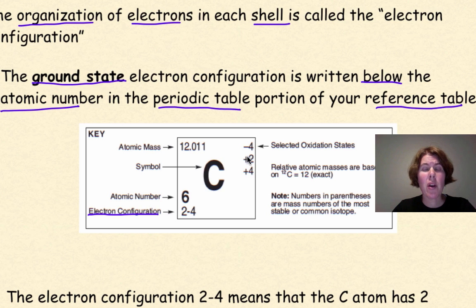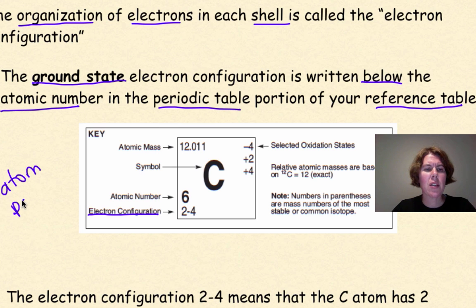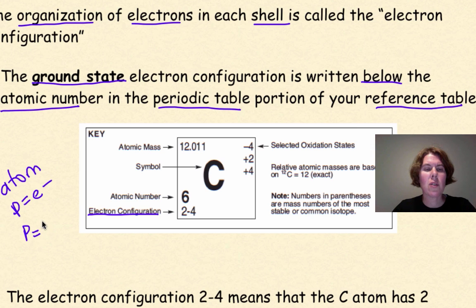Now remember, every element that's listed on your periodic table is an atom, and therefore if it's an atom, protons will equal electrons. So if my atomic number is 6, that means I have 6 protons. And if I add together 2 and 4, I get 6.